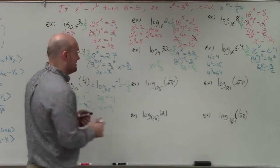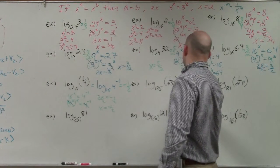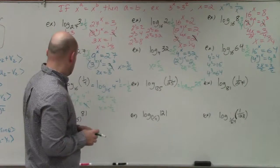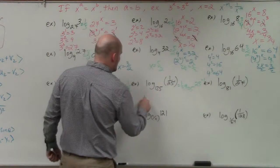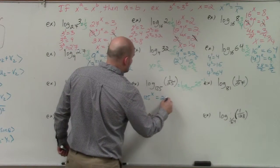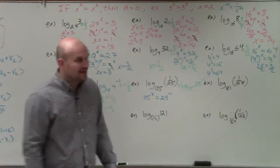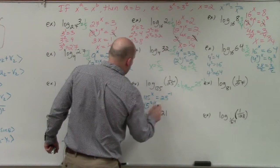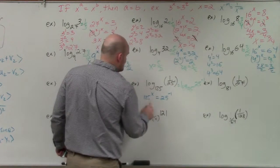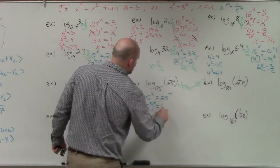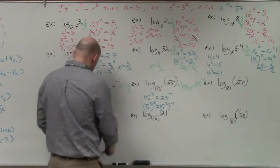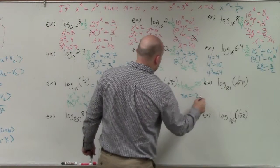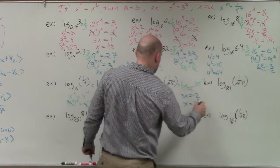For the next example I rewrite it as log base 125 of 25 to the negative first power. I'm asking: 125 raised to what power equals 25 to the negative first? I can write 125 as 5 cubed and 25 as 5 squared. So 5 cubed raised to the x equals 5 squared to the negative first. The 5s divide out, leaving 3x equals negative 2, so x equals negative two-thirds.